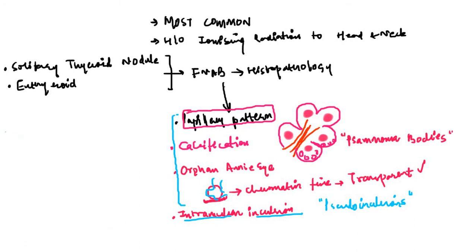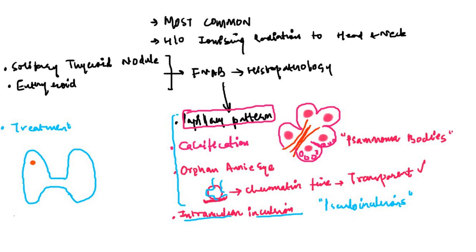Regarding management or treatment of papillary carcinoma of thyroid, the treatment depends on the size and site of the carcinoma. If the papillary carcinoma is isolated and small, the treatment will be a simple lobectomy, in which we cut out the lobe where the carcinoma arose. But if the size is larger and the carcinoma is found at multiple places, we will have to do a total thyroidectomy, in which the thyroid gland is completely removed.